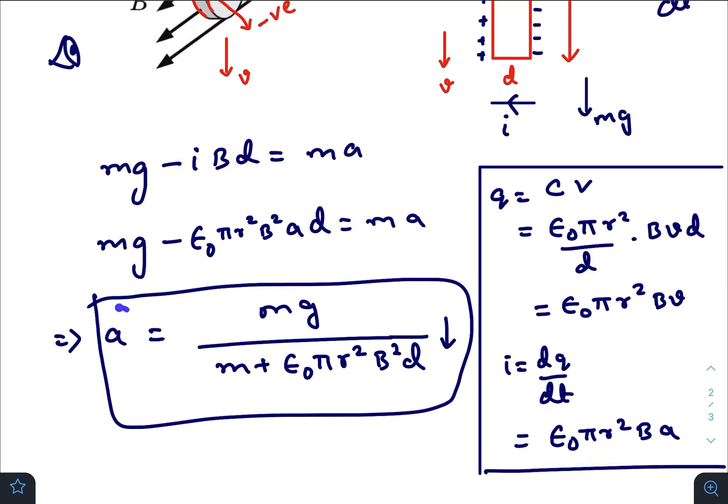And just find out the value of A, you will get the net acceleration with which the disk is falling downwards.